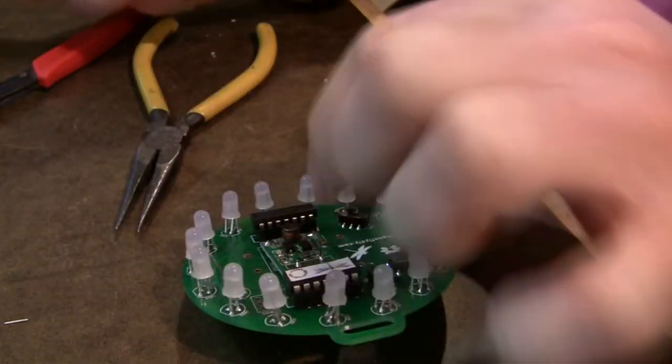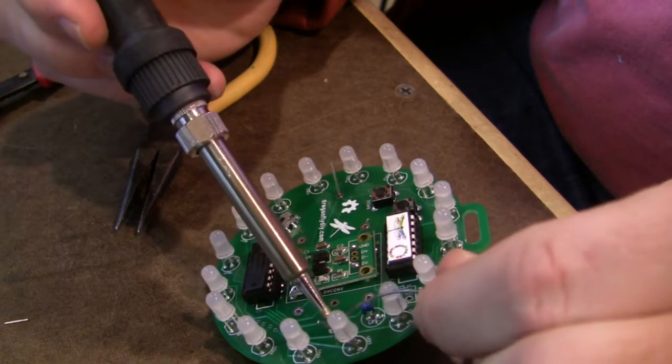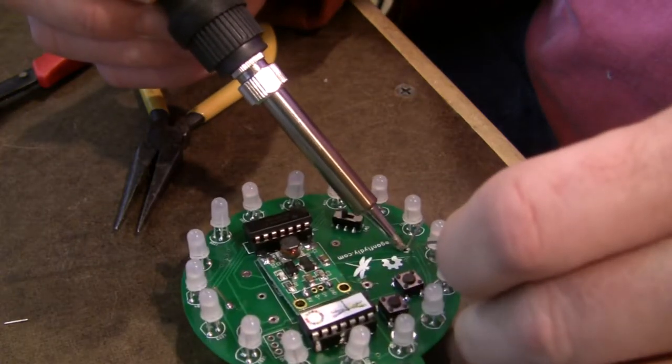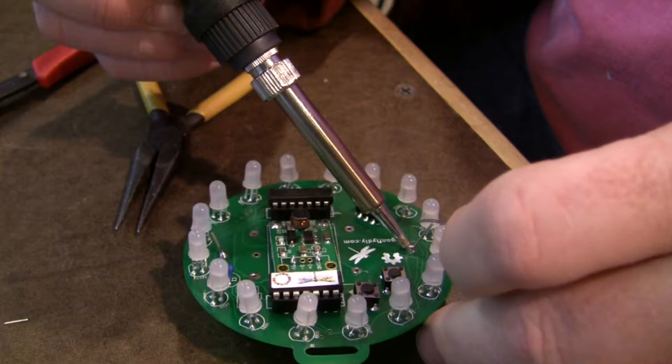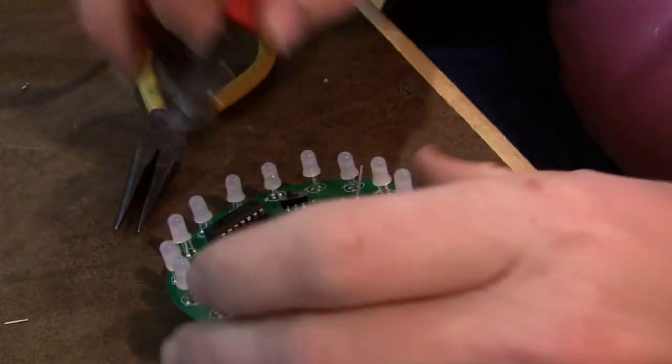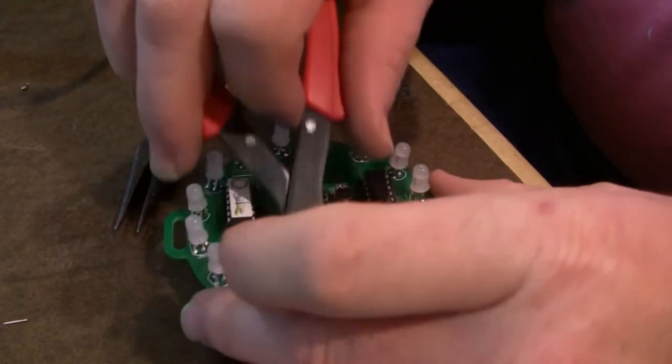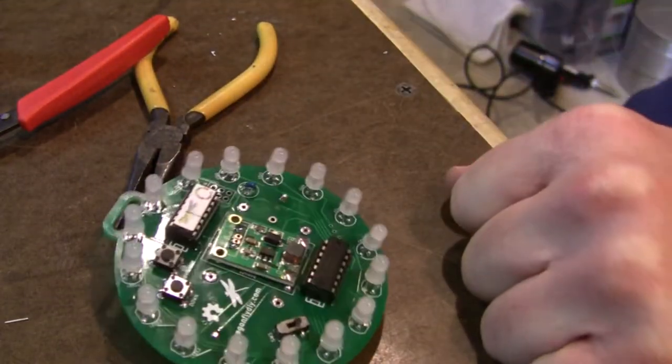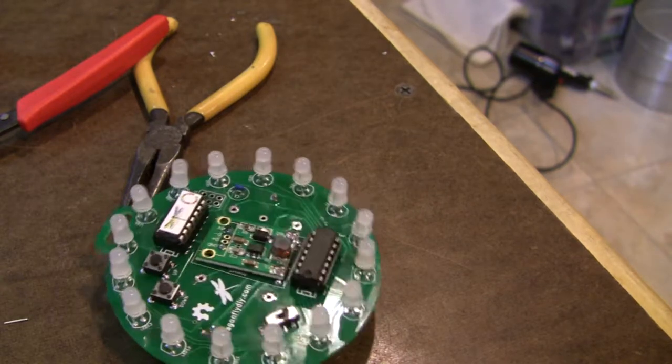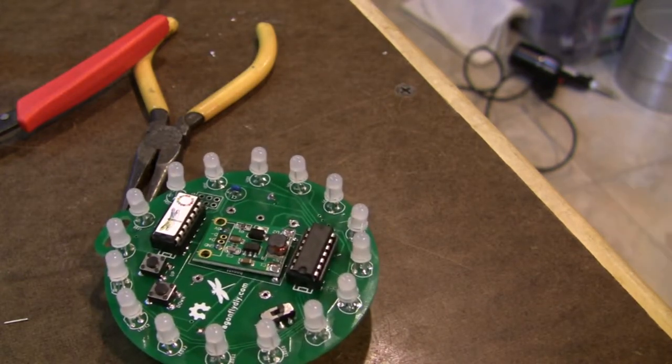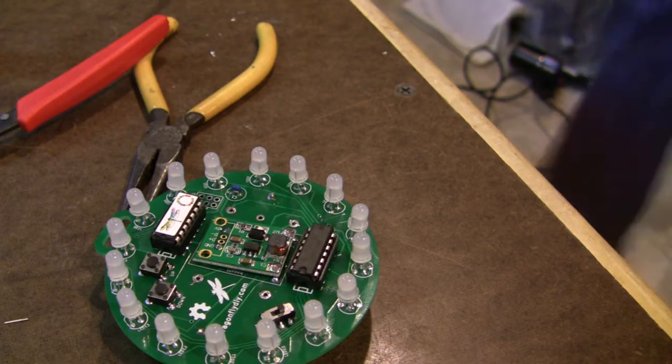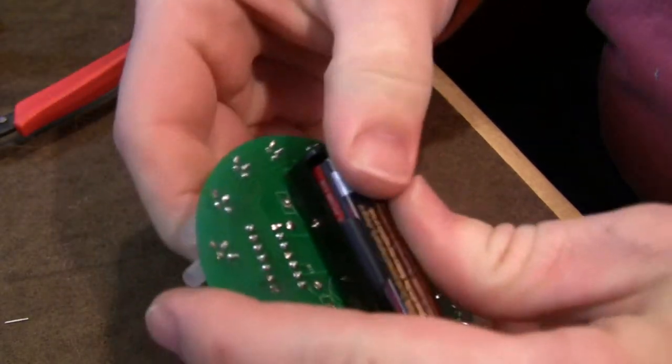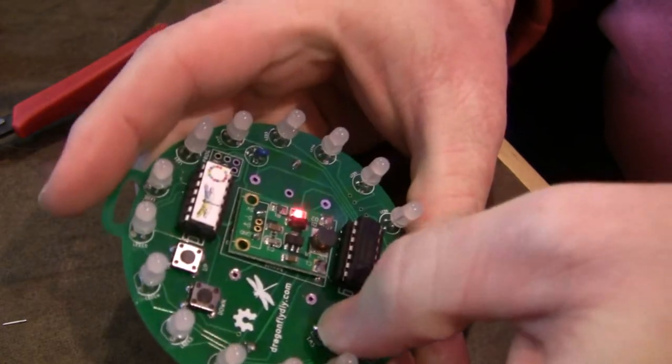Bend the leads out a little bit. Flip it over. A little soldering. It gets a little tippy at this point. There we go. Clip those leads off. It should be ready to go now. Get a battery and put the battery in place here. Turn it on. And there we go.